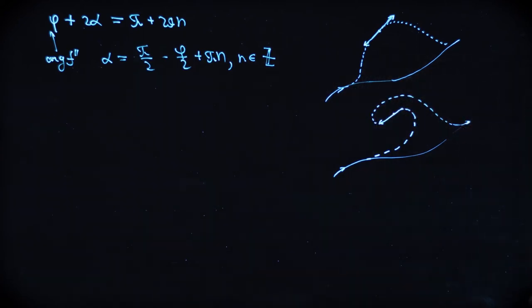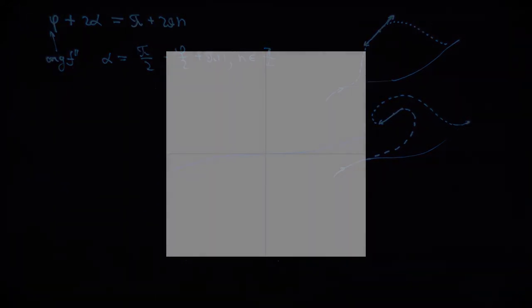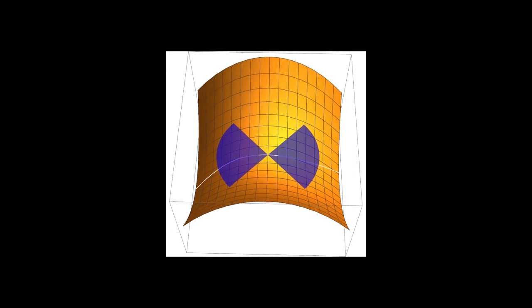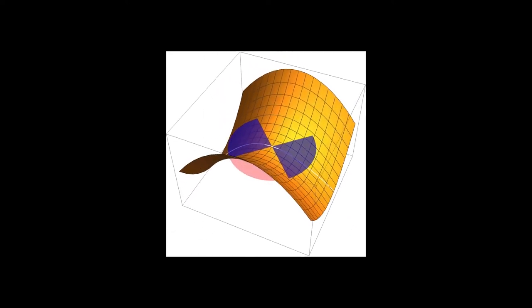So here we go. So this is the initial position of the contour and two possible choices of the steepest descent direction. But in reality, if you switch to the relief of our u function, let me make it slightly transparent.